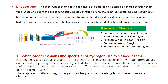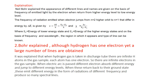These electrons return back to their ground state — either in one step or in several steps — and during each jump they emit extra energy in the form of radiation having different frequencies or wavelengths. In different regions, different types of lines are obtained, and the line spectrum is explained on the basis of the frequency of emitted light when electrons jump from a higher state to a lower state.